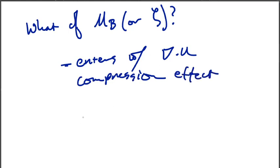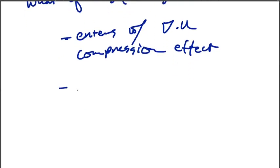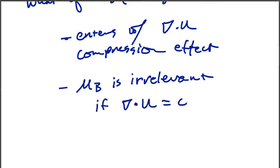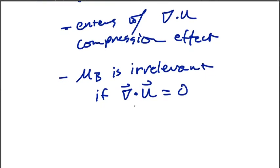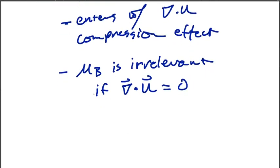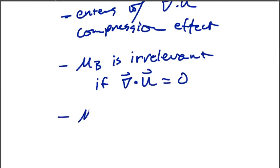So what we know then is that whatever this thing is, it's irrelevant if we have incompressible flow. If the divergence of u is zero, because the only spot that this bulk viscosity comes in the system is on a divergence of u term. So if divergence of u is zero, then whatever the bulk viscosity is, it won't affect the flow because it has no way to influence it.